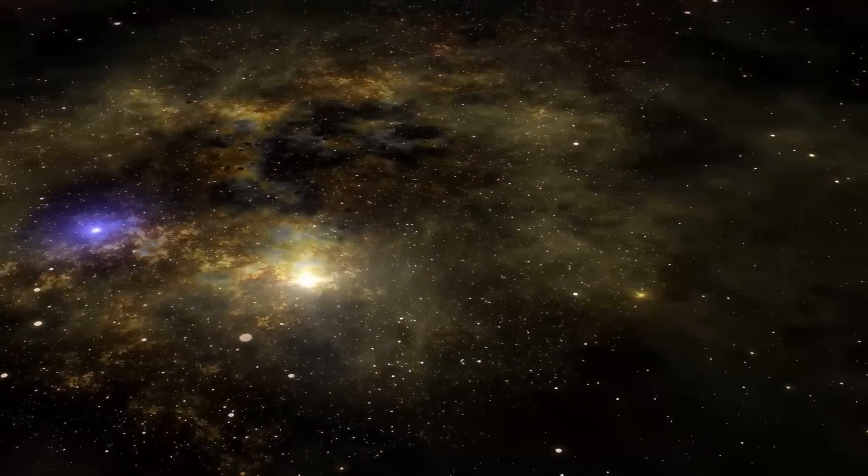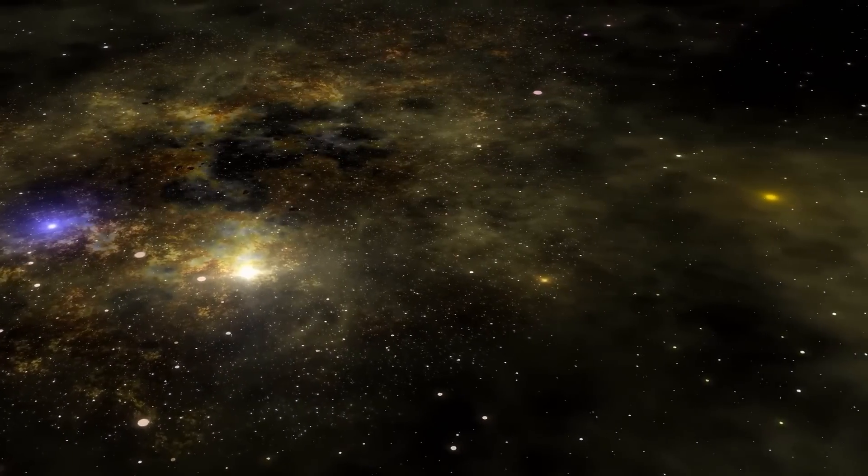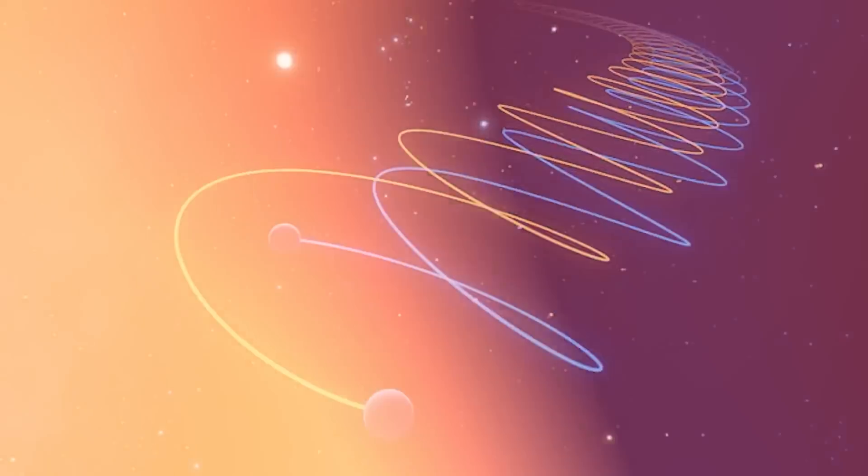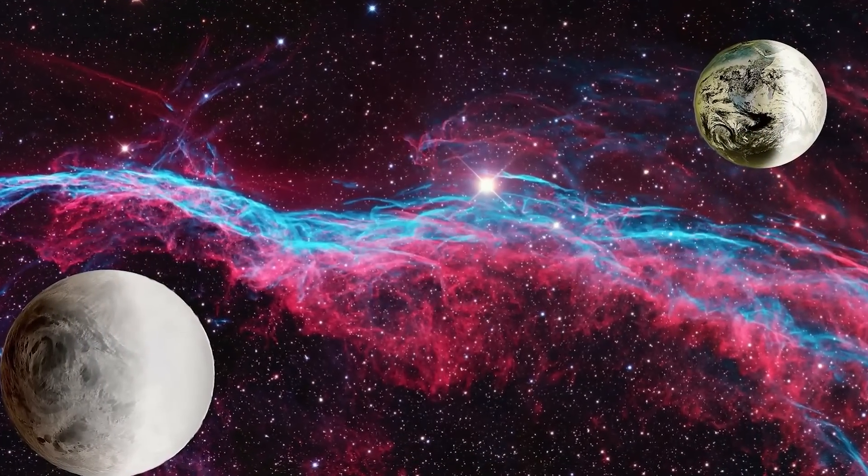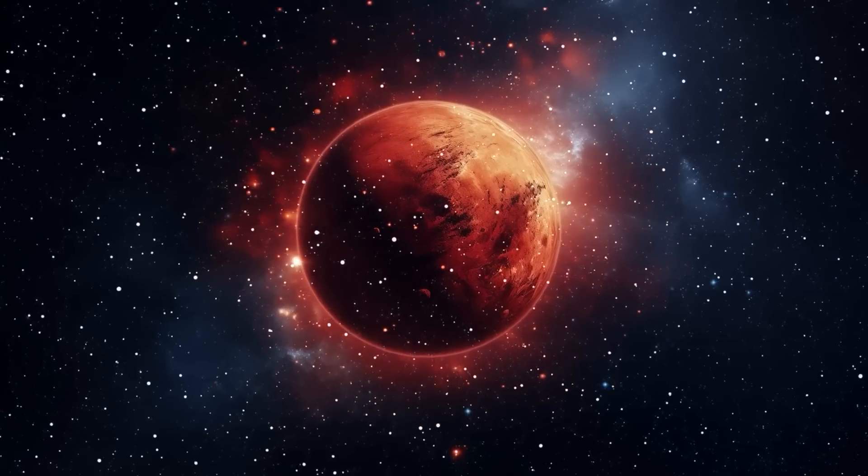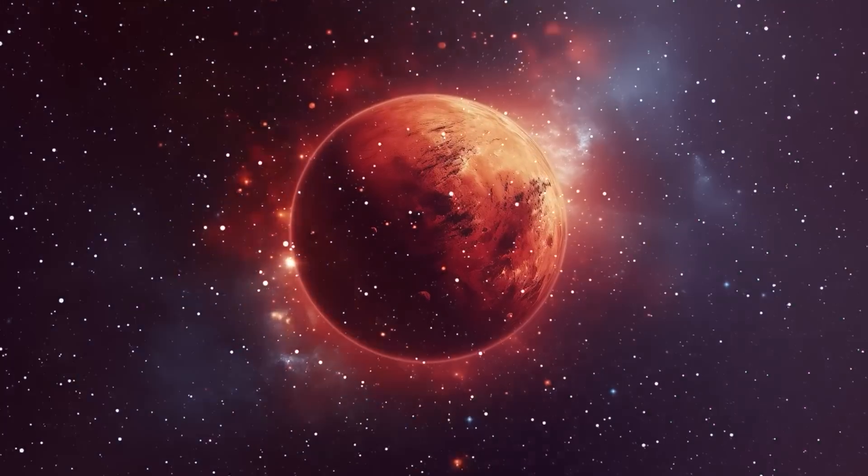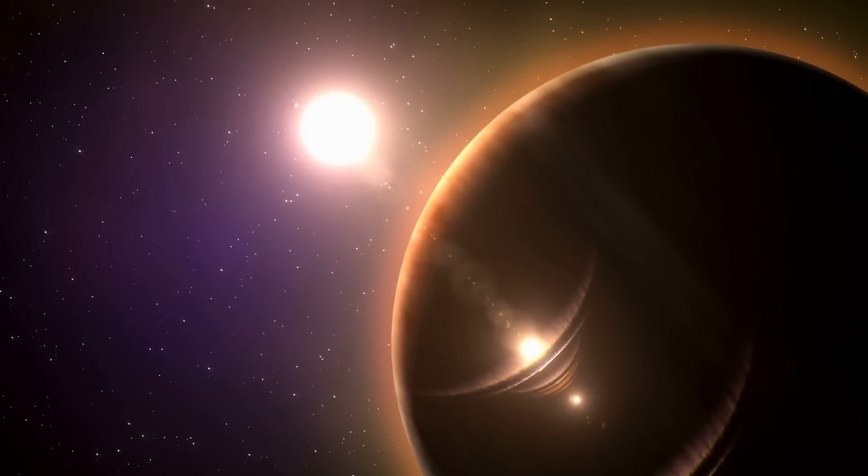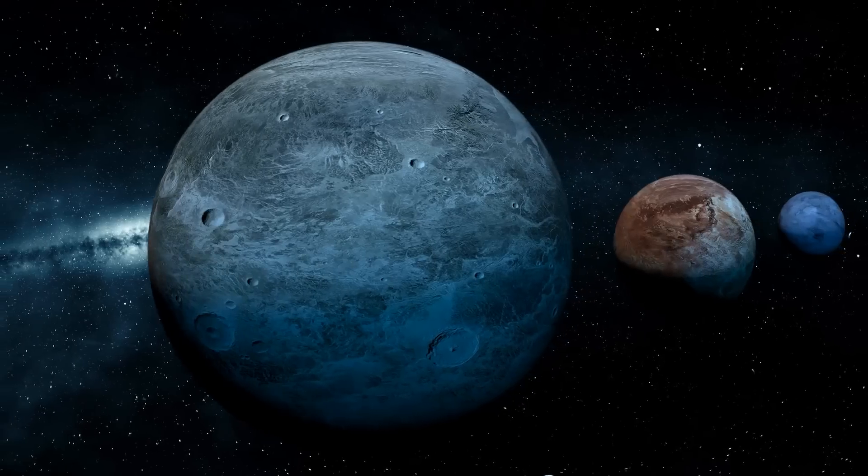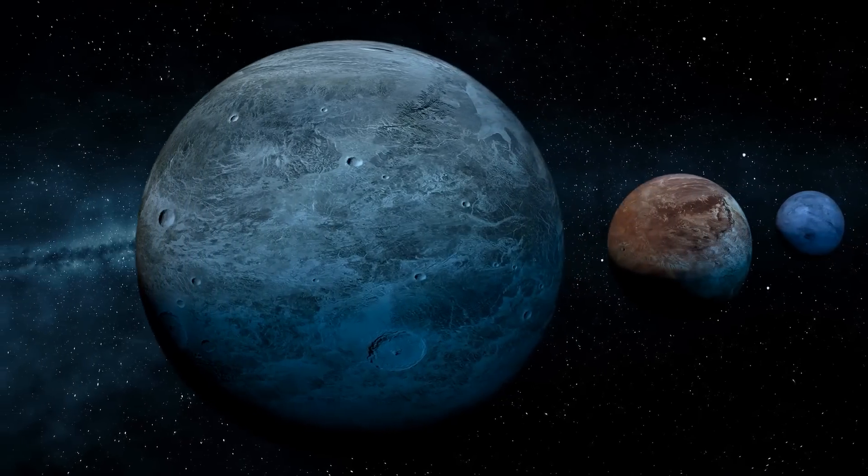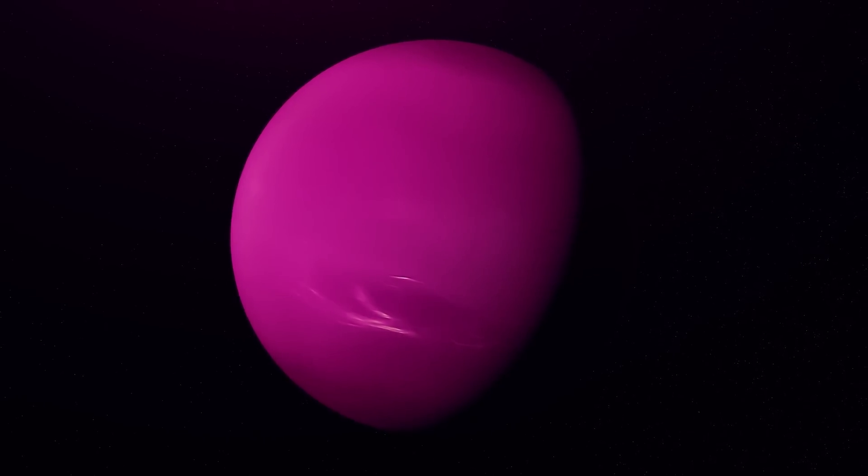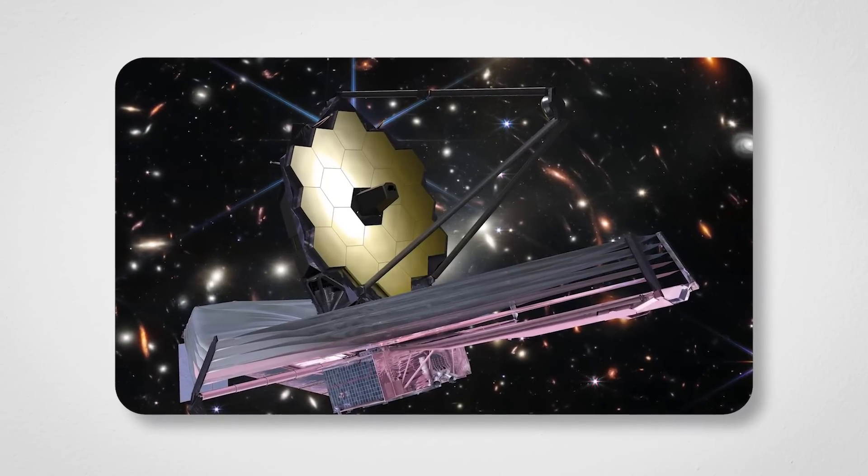First, some context. Gliese 504b is a giant exoplanet orbiting a star located about 57 light-years away from Earth. That's an immense distance, but in cosmic terms, it's relatively close. The planet is approximately four times the size of Jupiter, already making it a massive player in the planetary realm. What sets it apart though is its striking appearance. Gliese 504b is not just any gas giant. It's a glowing, pink-hued planet that looks almost otherworldly. Its coloration has earned it nicknames like the Cosmic Pink Flamingo.